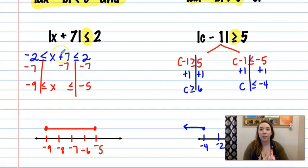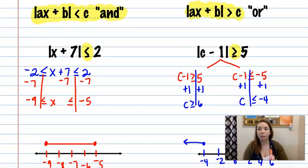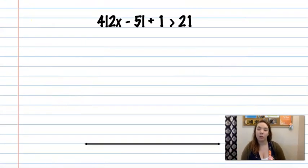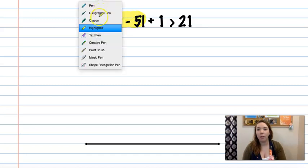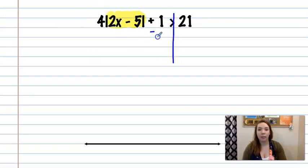Alright, so let's do a problem where it doesn't start isolated for us. So on this one, we have 4 times the absolute value of 2x minus 5 plus 1 is greater than 21. So first thing we want to do is isolate our absolute value. So I'm going to subtract 1 from both sides. So that'll give me 20, and then I'm going to divide by 4 on both sides.